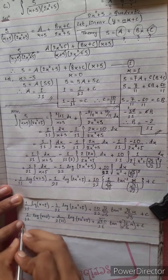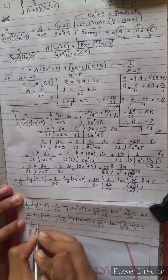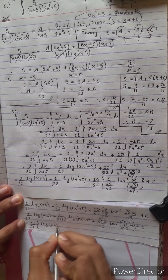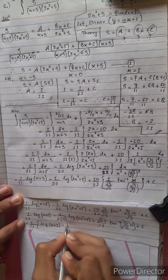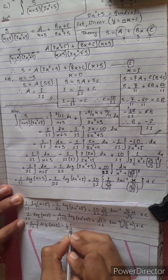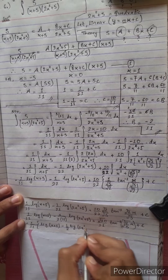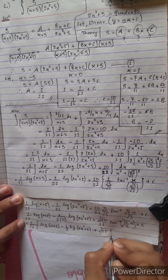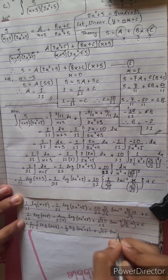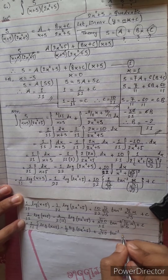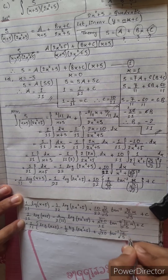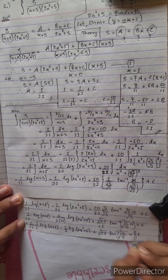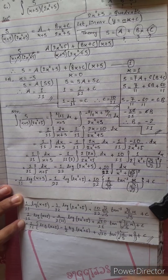Taking 1 by 11 common: the final answer is 1 by 11 times bracket log(x plus 5) minus 1 by 2 log(2x squared plus 5) plus root 10 times tan inverse (2 by 5 times x) plus C.